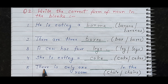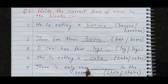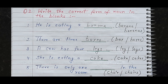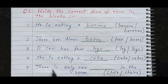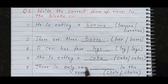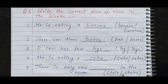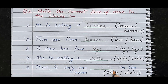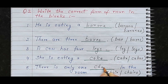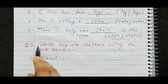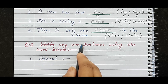Next: 'She is eating a dash' — the options are 'cake' and 'cakes.' Next: 'There is only one dash in the room.'